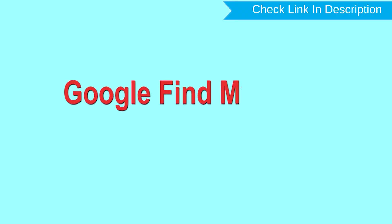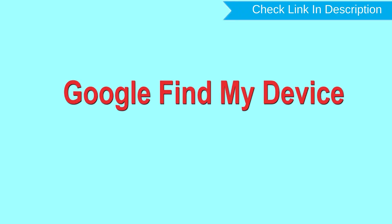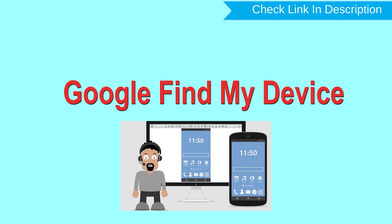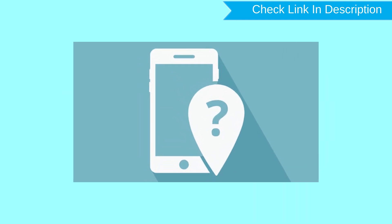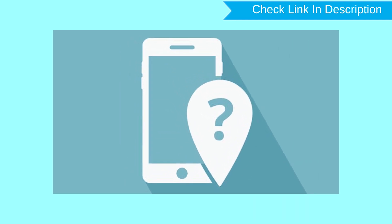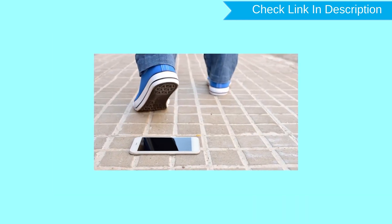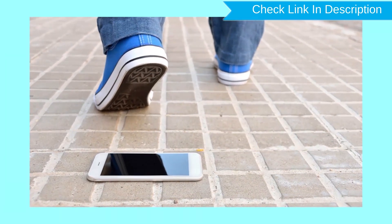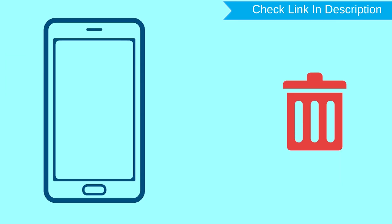Hard reset with Google Find My Device. This is the best method to reset your Android phone remotely. This method is useful when you lose your phone or are not able to access your mobile. This method also deletes all your Android phone data.